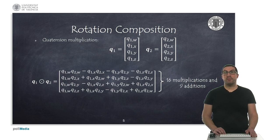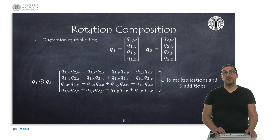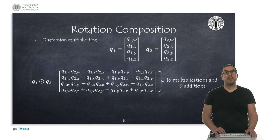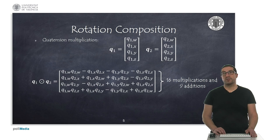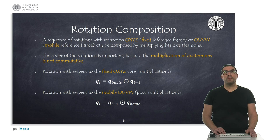It can be shown that given two quaternions — the first representing the orientation of the first reference frame, and the second representing the orientation of the second reference frame with respect to the first one — the orientation of the second reference frame with respect to the global reference frame is the multiplication of these two quaternions. This operation can be computed as indicated here, and involves 16 multiplications and 9 additions. Thus, we can perform the composition of rotations by performing multiplication operations between quaternions.